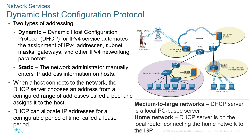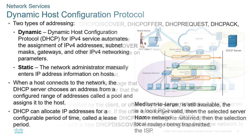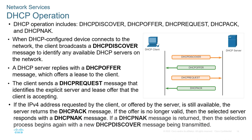When a host connects to a network, it gets an address one of two main ways: dynamically or statically. If configured statically, the device connects automatically because it already has the address information. If it has a dynamic address, when it connects it goes through a process to obtain an IP address. That process is called DORA — D-O-R-A — which stands for Discover, Offer, Request, and Acknowledgement.